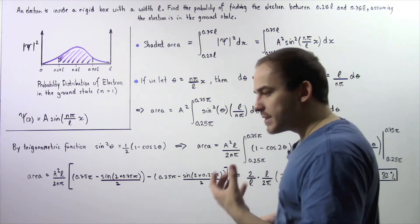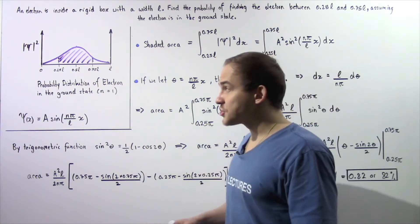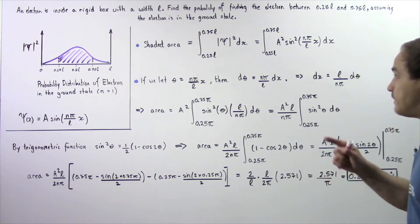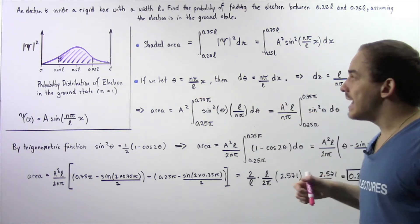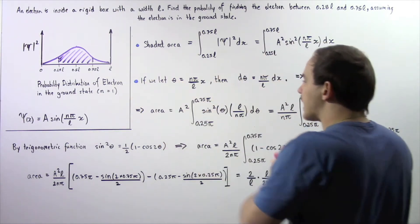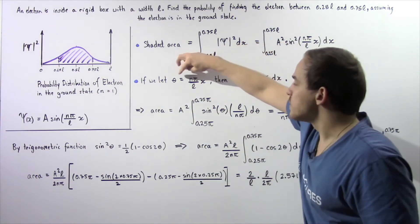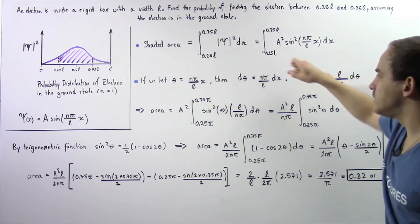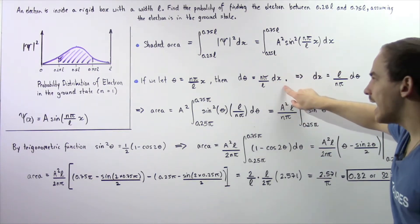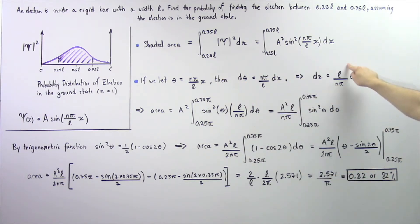Now we follow the same exact steps that we took in the previous lecture. We want to replace x with θ. So we set θ equal to nπ/L multiplied by x. We integrate both the left and right side, or take the derivative of the left side as well as the right side. The derivative of the left side is dθ, derivative of the right side is n multiplied by π/L dx. We solve for dx and see that dx equals L/nπ multiplied by dθ.